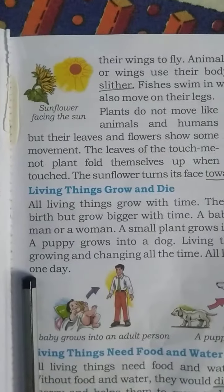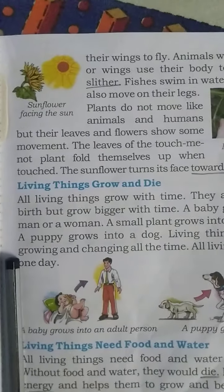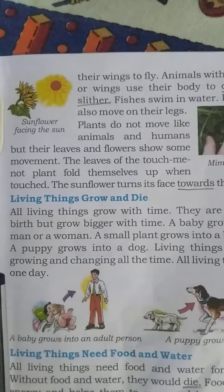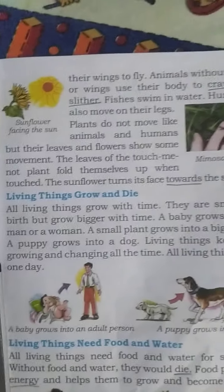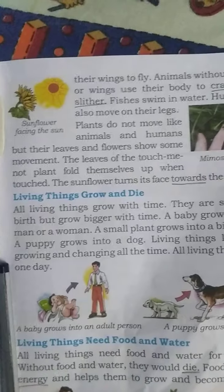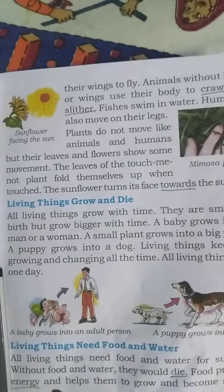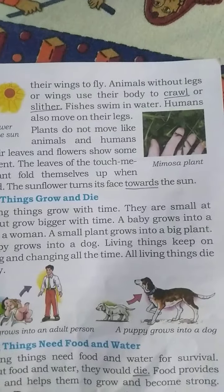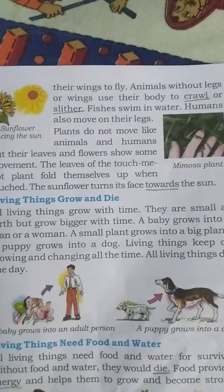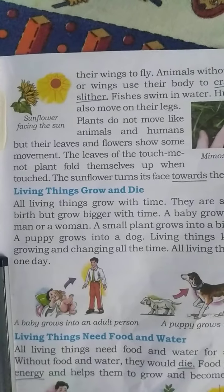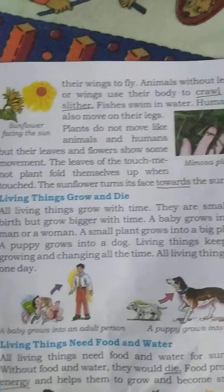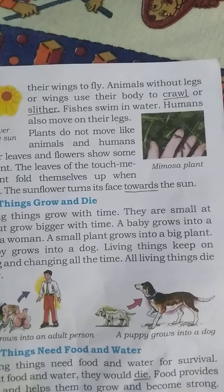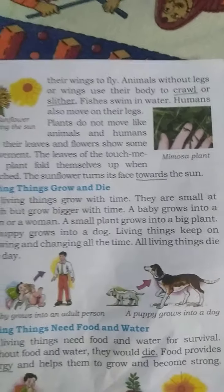Next, living things grow and die. All living things grow with time. They are small at birth but grow bigger with time. When they are born they are small, but over time they become bigger. A baby grows into a man or woman. Small plants grow into big plants.